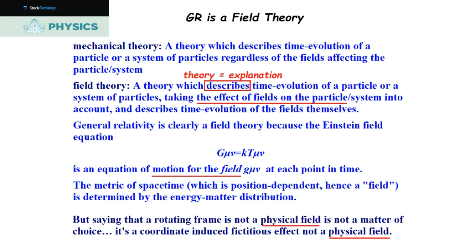Today we're dealing with the tests and confirmations of relativity. What is a confirmation? It means you're going to do some kind of test. One fellow on Stack Exchange distinguishes between a mechanical theory — which describes time evolution of a particle regardless of the fields affecting it — and a field theory, which takes the effect of fields on the particle into account and also describes the time evolution of the fields themselves.